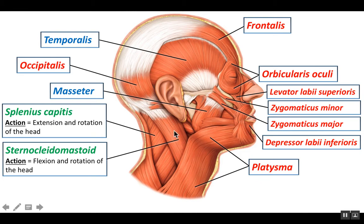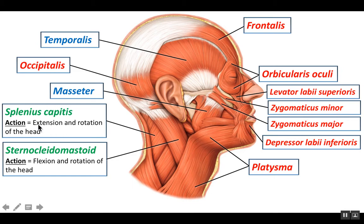The sternocleidomastoid also attaches to the mastoid process, so they both have the same insertion. The difference is where do they pull towards? The splenius capitis is going to pull down on the back part of that mastoid process, and if you're pulled down on the back part of the mastoid process, you look up. When you look up into the sky, we call that extension of the head and neck — so it extends the head.